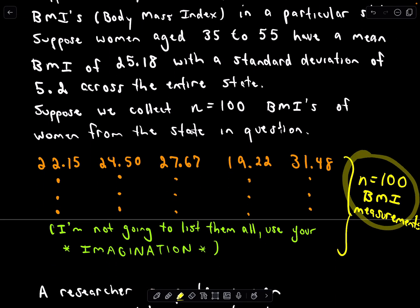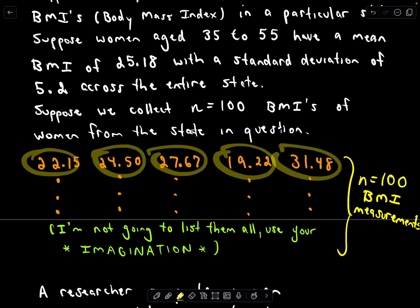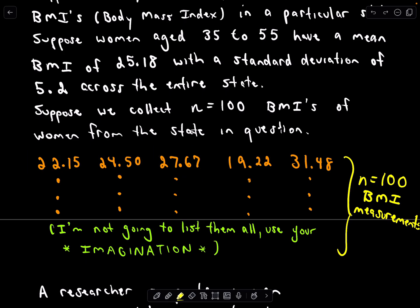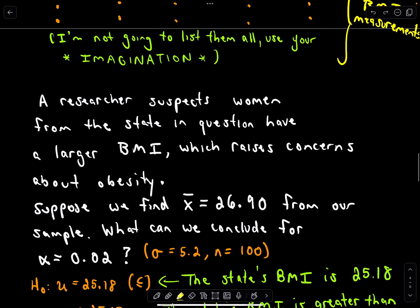Suppose we go out there and we collect 100 data points about the BMI of these women from ages 35 to 55. A researcher suspects women from the state in question actually have a larger BMI than what we had previously, which raises concerns about obesity.